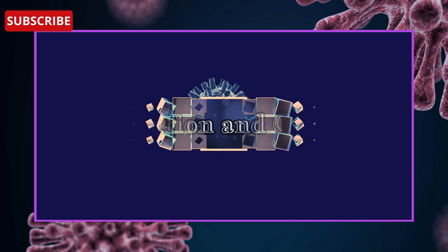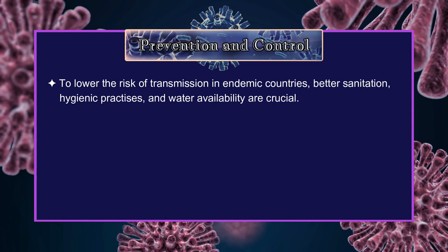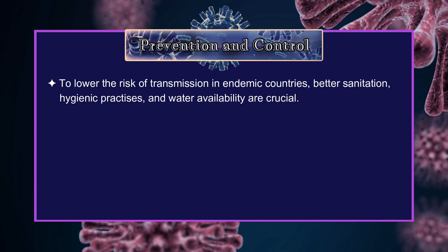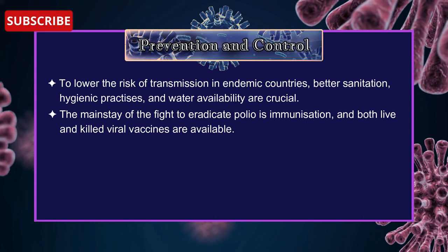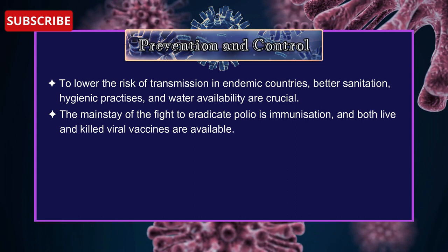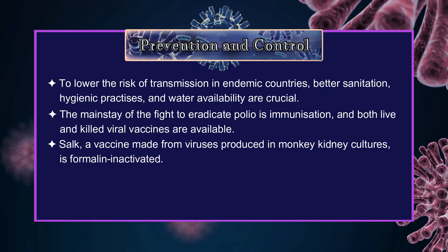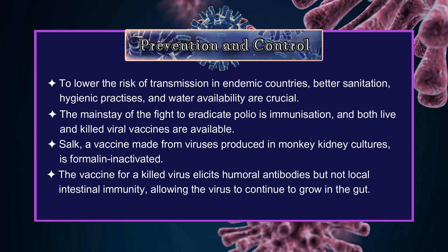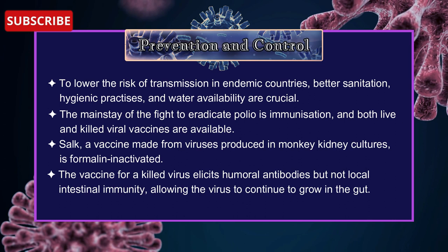Prevention and Control of Poliovirus: To lower the risk of transmission in endemic countries, better sanitation, hygienic practices, and water availability are crucial. The mainstay of the fight to eradicate polio is immunization, and both live and killed viral vaccines are available. The killed vaccine (IPV) is formalin-inactivated, made from viruses produced in monkey kidney cultures. Vaccines for killed virus elicit humoral antibodies but not local intestinal immunity, allowing the virus to continue to grow in the gut.